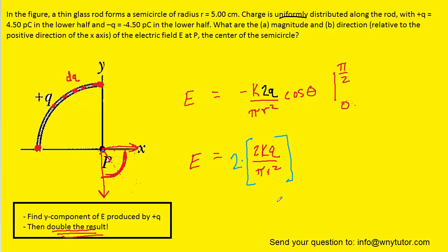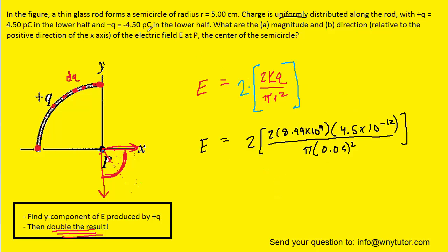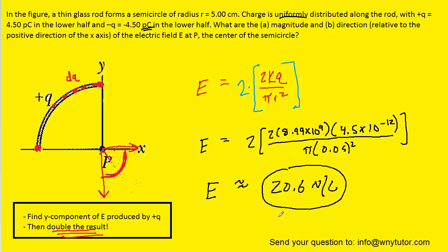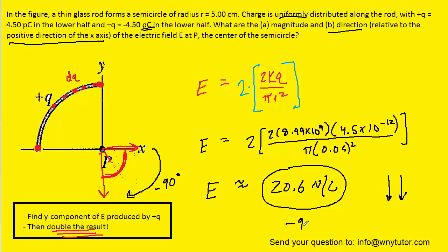Plugging in the upper limit and subtracting the lower limit, the bracket simplifies to 0 minus negative 1, which equals 1 — so the expression becomes positive. Don't forget we have to double this result, because this was the electric field from only the positive rod; the negative rod contributes equally. Plugging in k, Q, and r — and converting picocoulombs to coulombs by multiplying by 10⁻¹² — we get approximately 20.6 newtons per coulomb. That is the correct answer for part A. For part B, the direction: the y-components were pointing downward, so the overall electric field points downward — negative 90 degrees relative to the positive x-axis.